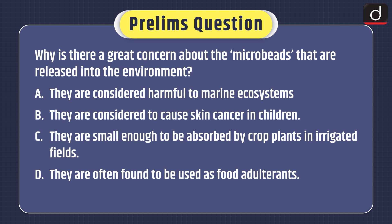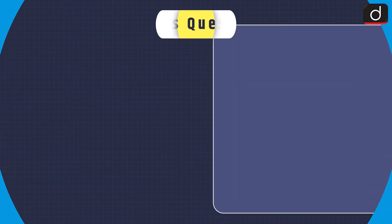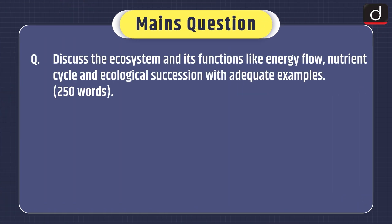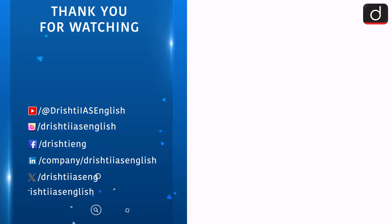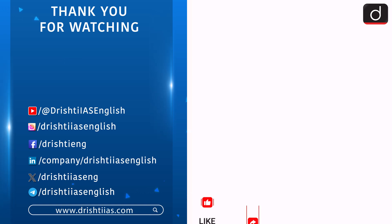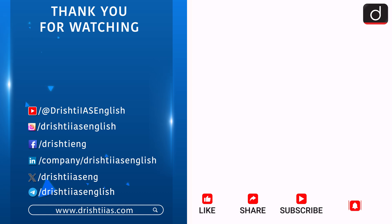First, a prelims-based question: Why is there great concern about microbeads that are released into the environment? Options: they are considered harmful to marine ecosystems; they are considered to cause skin cancer in children; they are small enough to be absorbed by crop plants in irrigated fields; or they are often found to be used as food adulterants. You can send the answer in the comment section. For the Mains practice question: Discuss the ecosystem and its functions like energy flow, nutrient cycle and ecological succession with adequate examples. That's all for today — stay tuned for the next episode. For more informative content, like, share and subscribe, and do not forget to press the bell icon to get notifications.